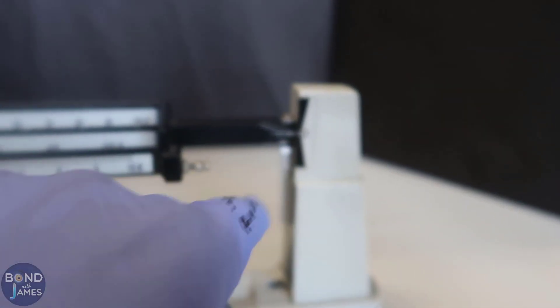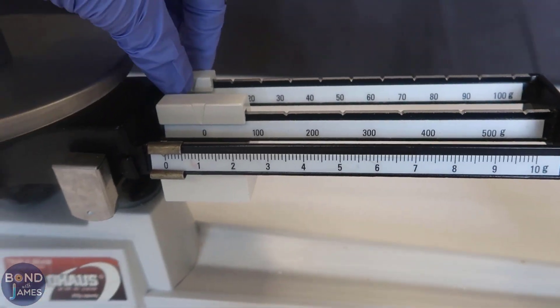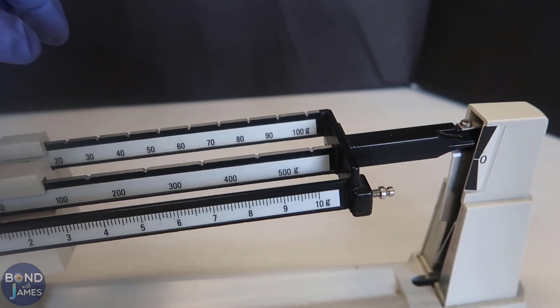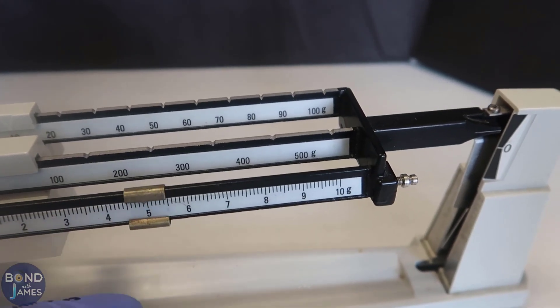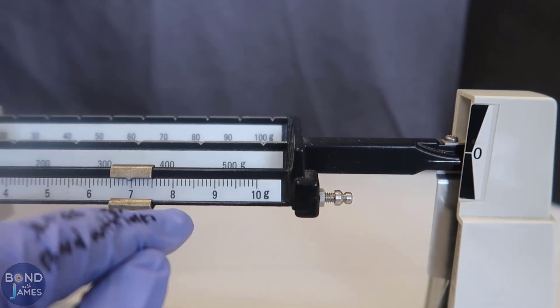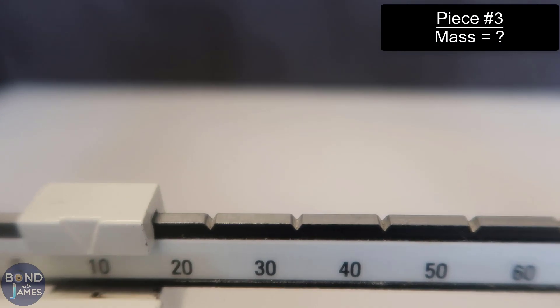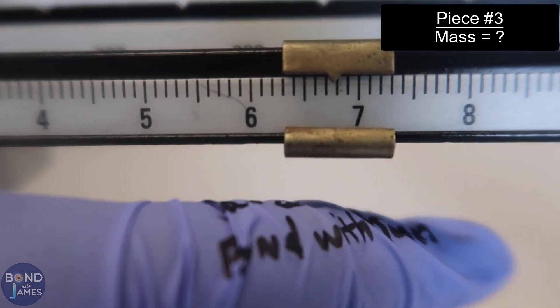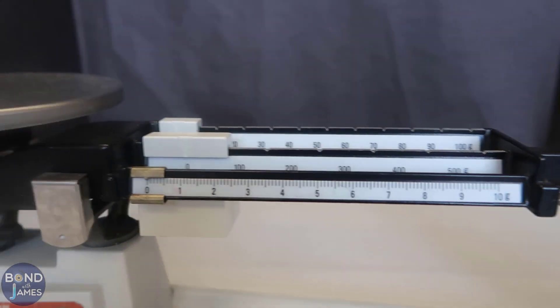Here is piece number three, zeroed out the balance, I'm going to weigh it. Let's take a look at the measurements. And now piece number four, the final piece, zeroed out the balance, I'm going to put this on.